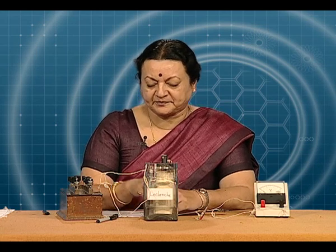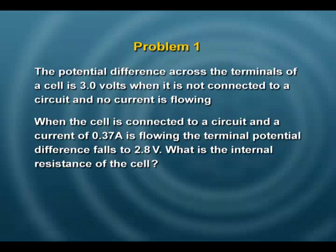That is an easy way of calculating internal resistance. Suppose the potential difference across the terminals of a cell is 3 volts when it is not connected to a circuit and no current is flowing — so 3 volts is the EMF. When the cell is connected to a circuit and a current of 0.37 amperes is flowing, the terminal potential difference falls to 2.8 volts. What is the internal resistance of the cell?